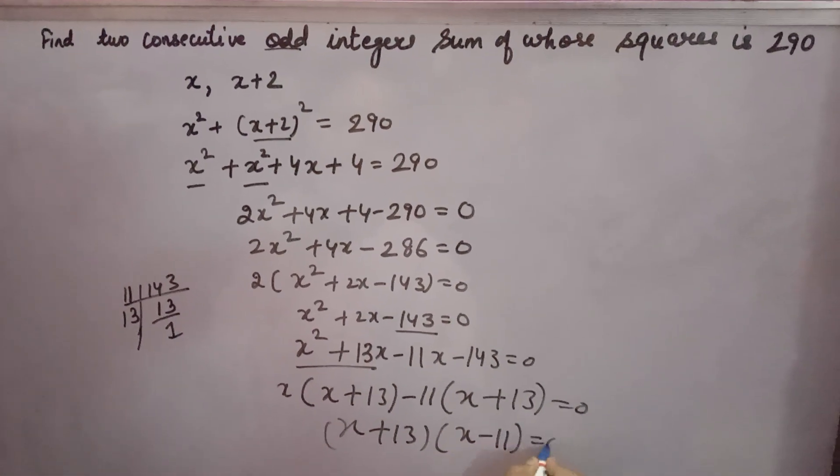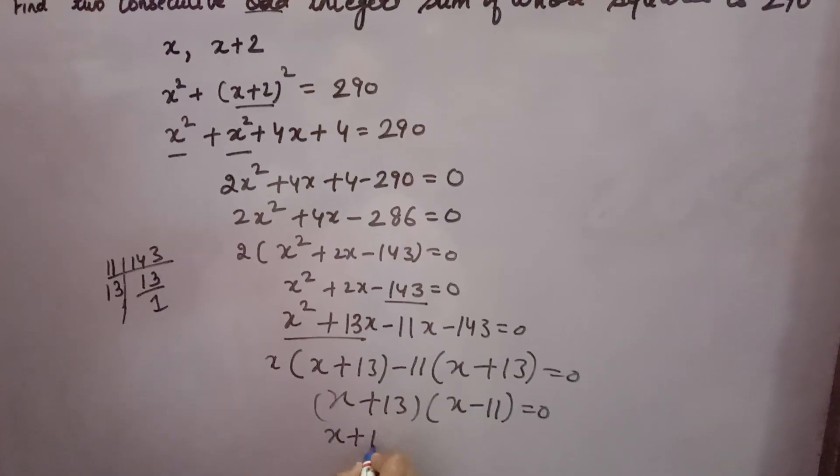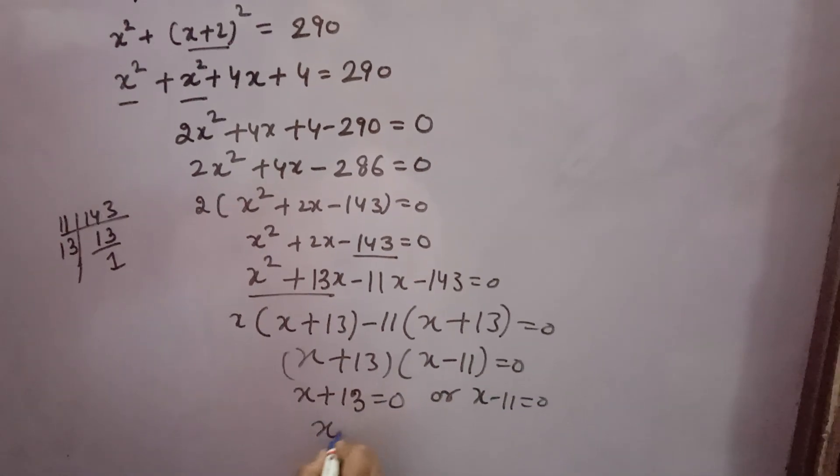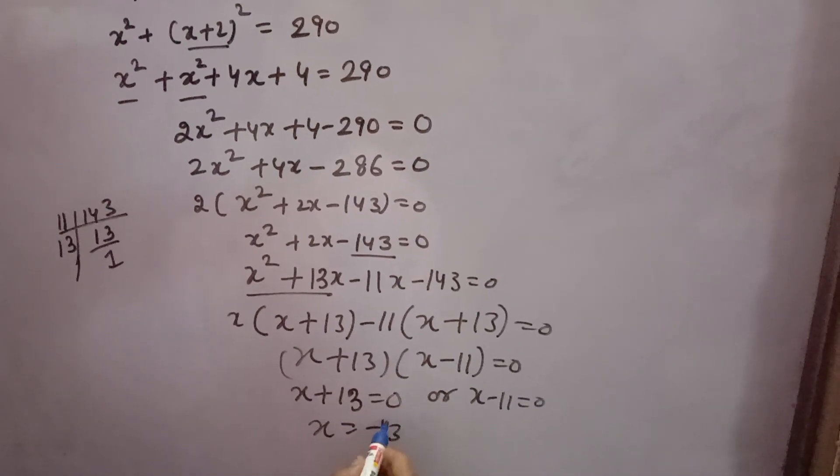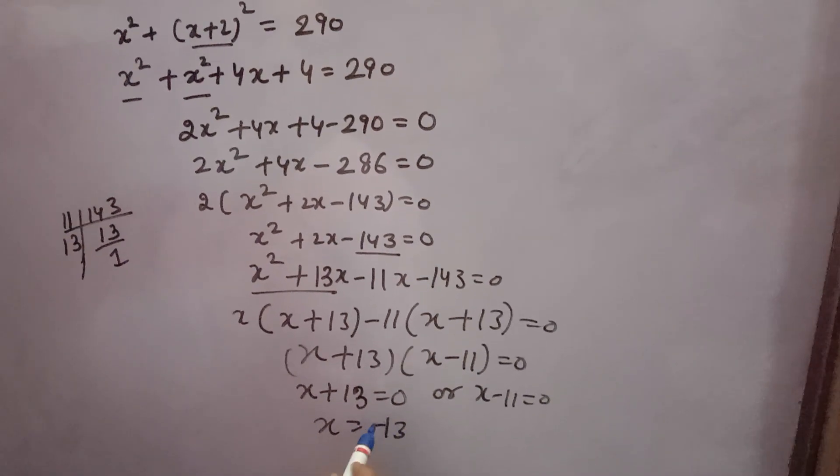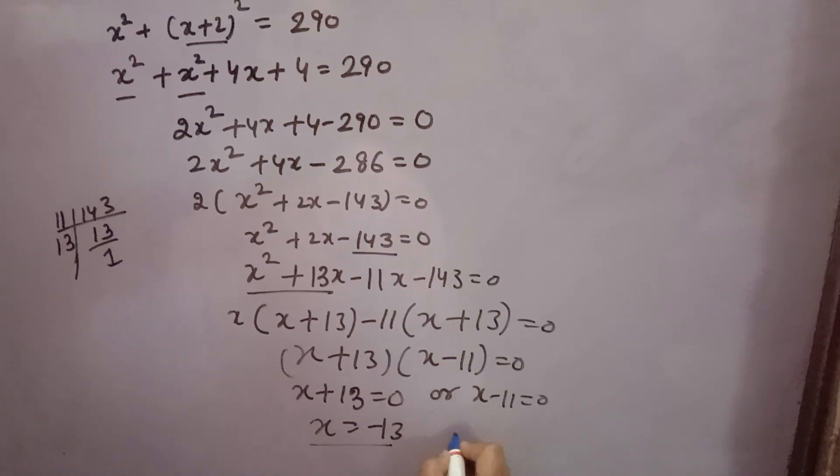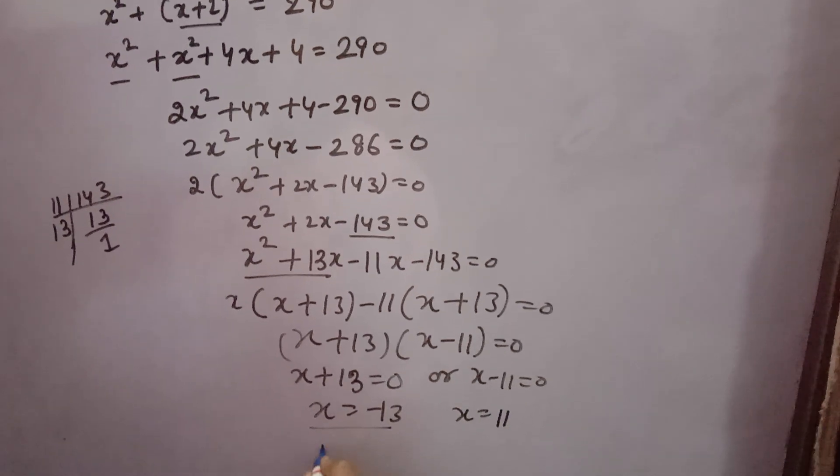Either x + 13 equals 0 or x - 11 equals 0, giving x equals minus 13 or x equals 11. Because we need positive odd integers, neglect minus 13. You get x equals 11.